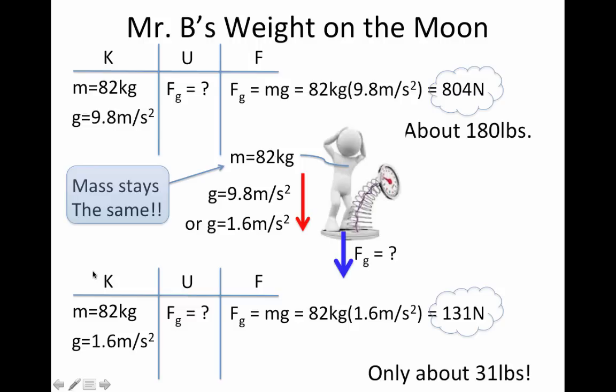So let's do some problems with weight here. Let's do a little comparison. Let's see my weight on the Earth versus my weight on the moon. So if we're doing a problem like this, and I knew my mass on the Earth, which it is right around 82 kilograms, or about 180 pounds, so 82 kilograms of mass, and I know that the acceleration due to gravity on Earth is 9.8 meters per second squared, then I could find my weight, because weight is equal to mg. So the 82 kilograms times 9.8 meters per second squared is 804 newtons. That's about 180 pounds. I guess I'm glad we use pounds in the United States, because wow, 804 newtons. That sounds like a lot.